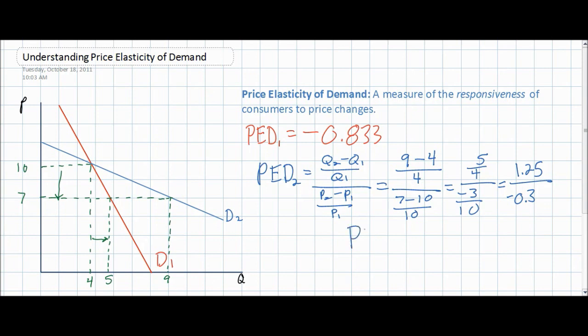Simplifying, 9 minus 4 over 4 gives us 1.25, and negative 3 over 10 is negative 0.3. The price elasticity of demand for good two equals 4.167. This tells us that for every 1% decrease in price, the quantity demanded increases by 4.167%. When the price decreases by 30%, the quantity demanded increased by 125% from 4 units to 9 units. Clearly the price elasticity of demand for good two is much greater than it was for good one.